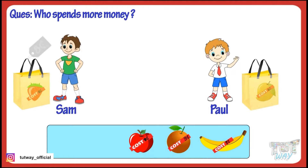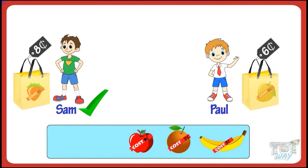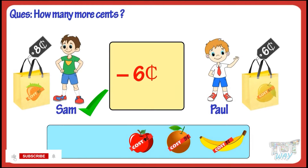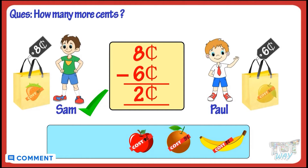Sam spent eight cents and Paul spent six cents, so Sam spent more. But how many more cents did he spend? Let's find it out. Subtract the smaller amount from the bigger amount to get the difference. Eight cents minus six cents, you get two cents. So Sam spent two more cents than Paul.